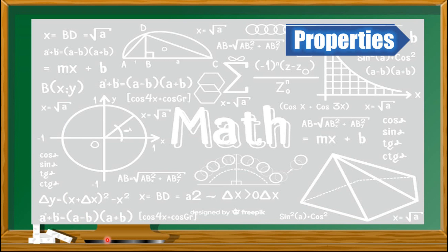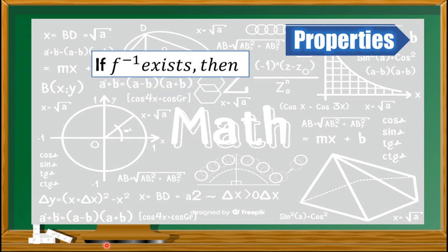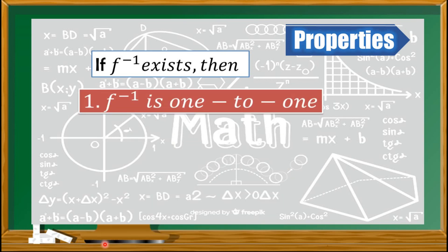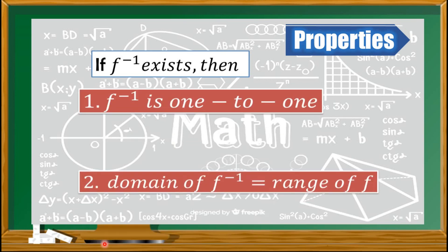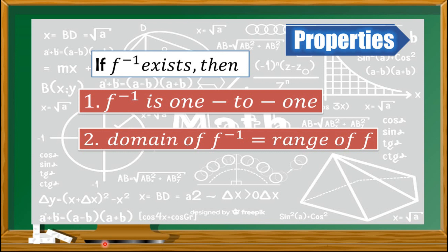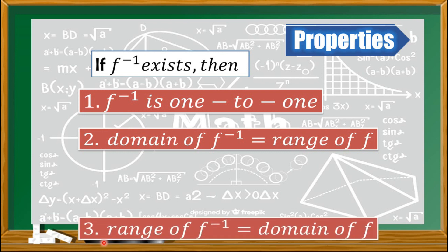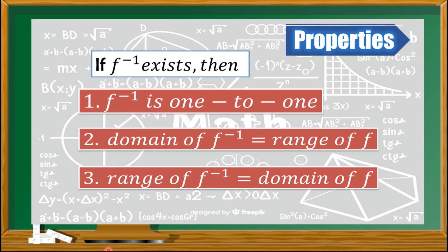To find the domain and range of an inverse function, we need to follow certain properties. If f inverse exists, then the following statements are true. First, f inverse is one-to-one. Second, the domain of f inverse is equal to the range of the function. And third, the range of f inverse is equal to the domain of the function.